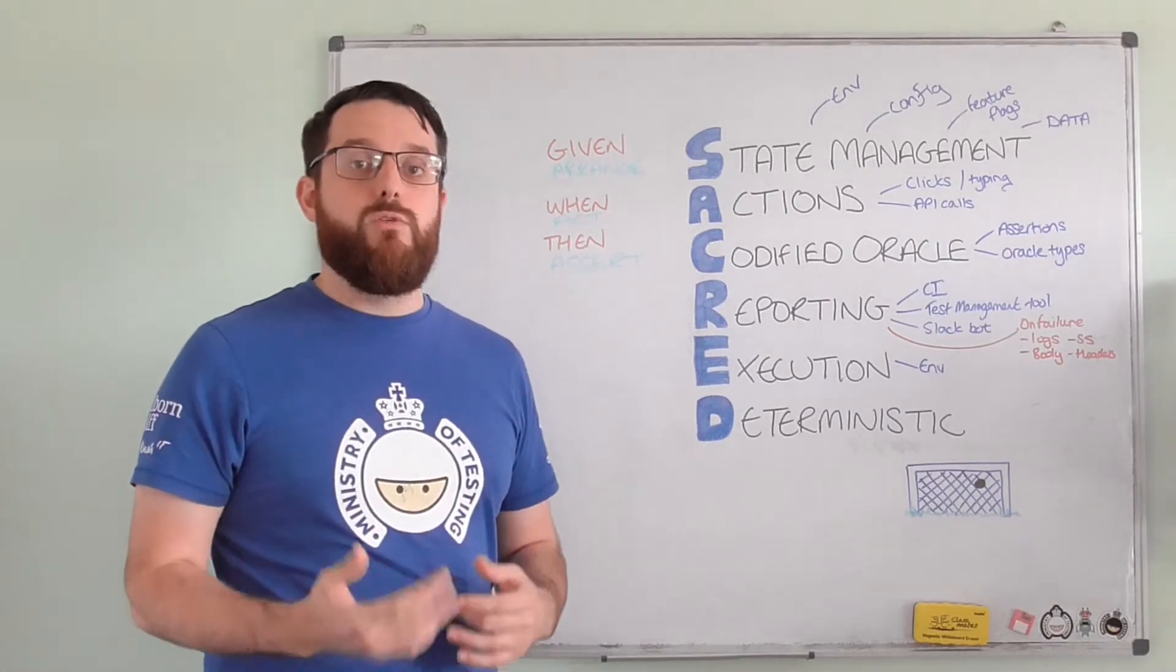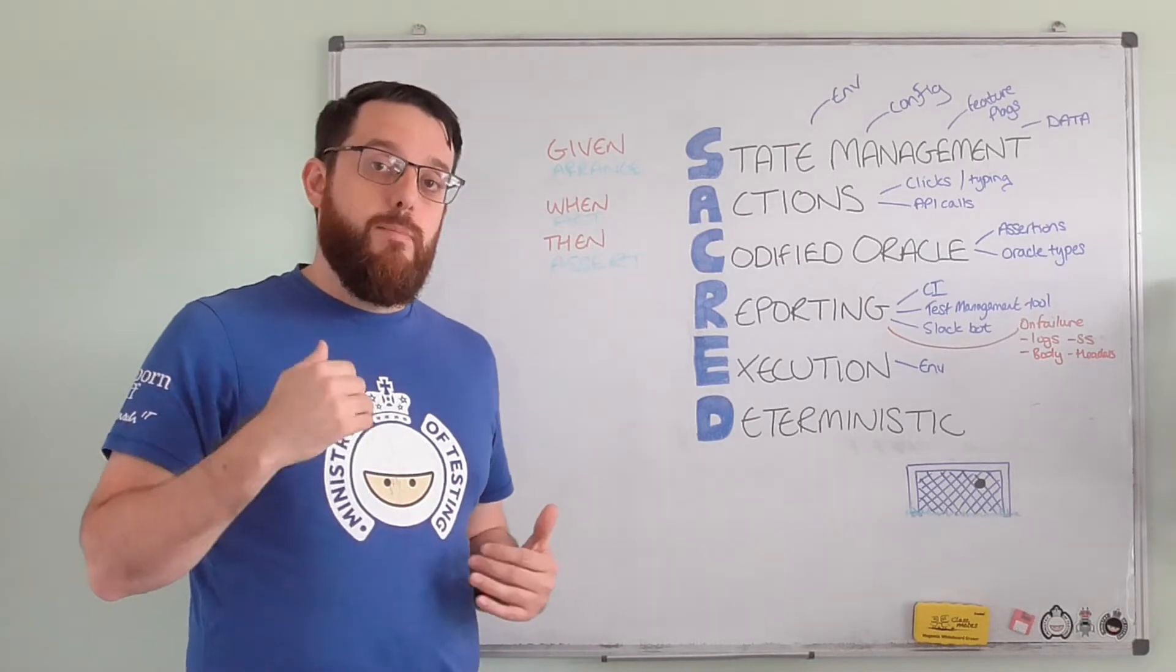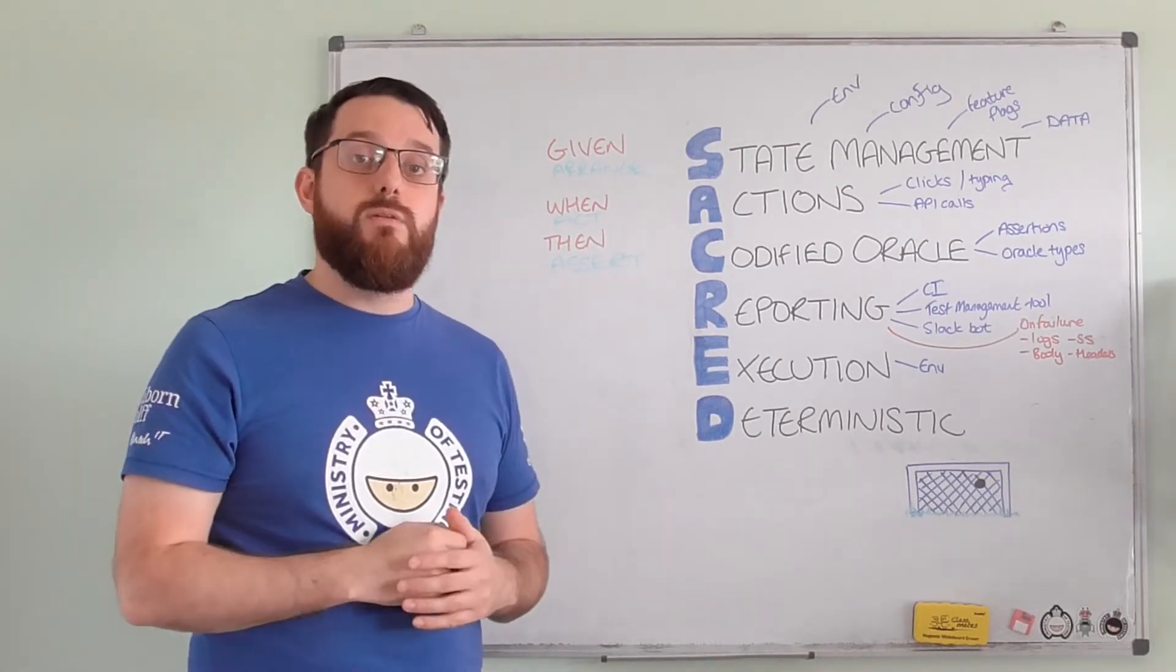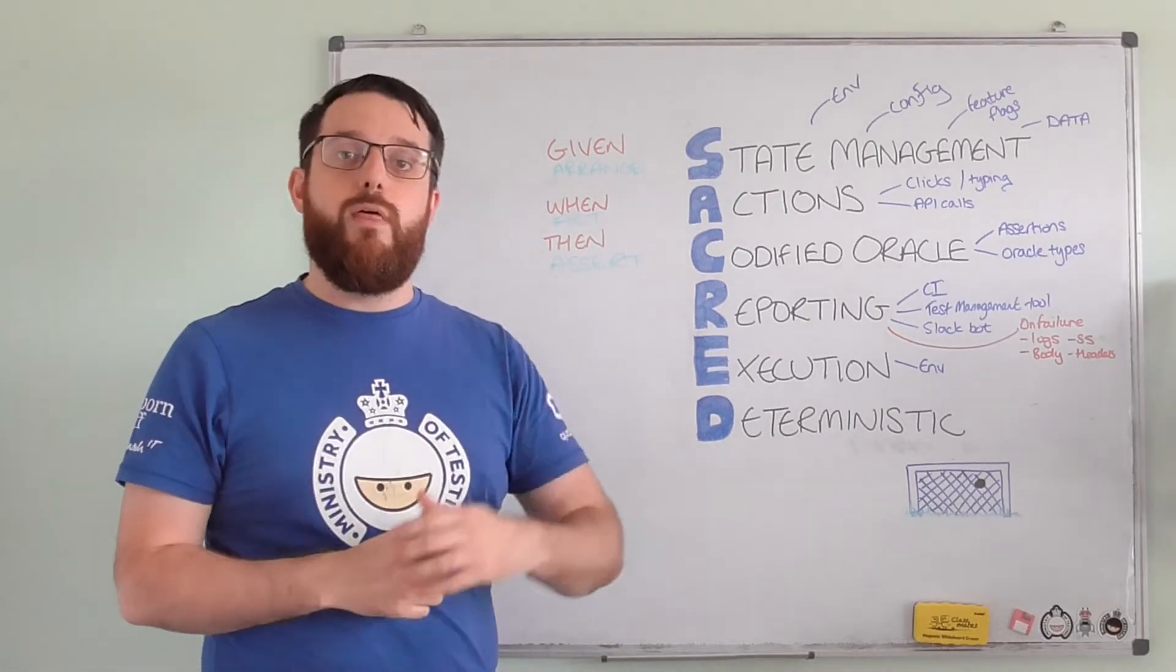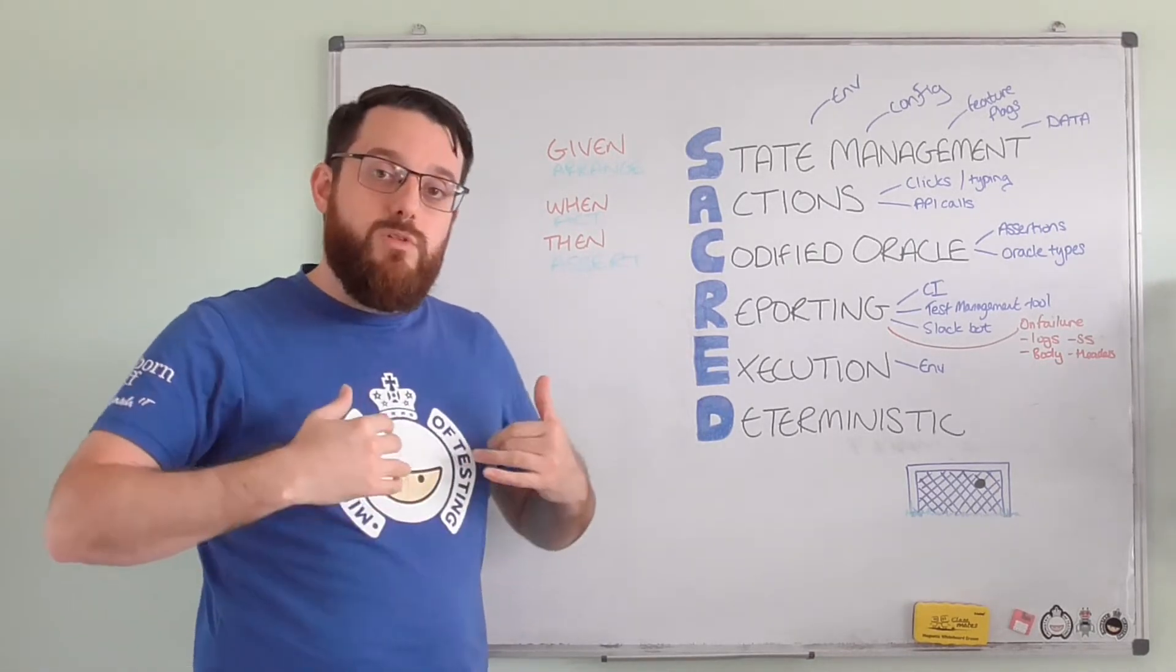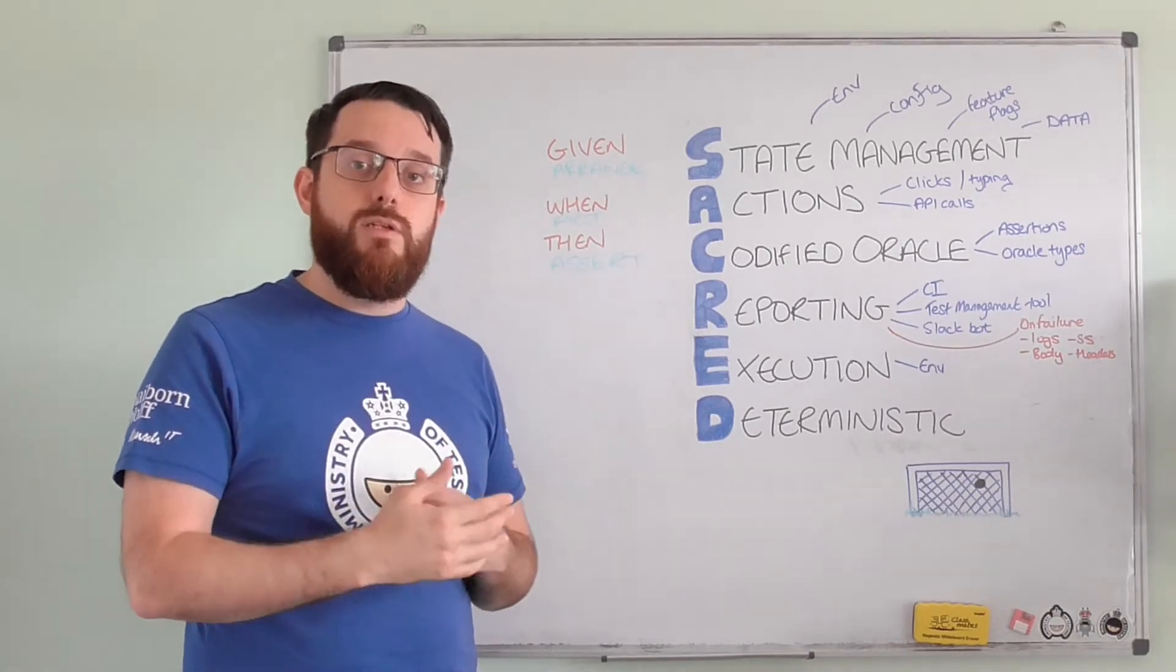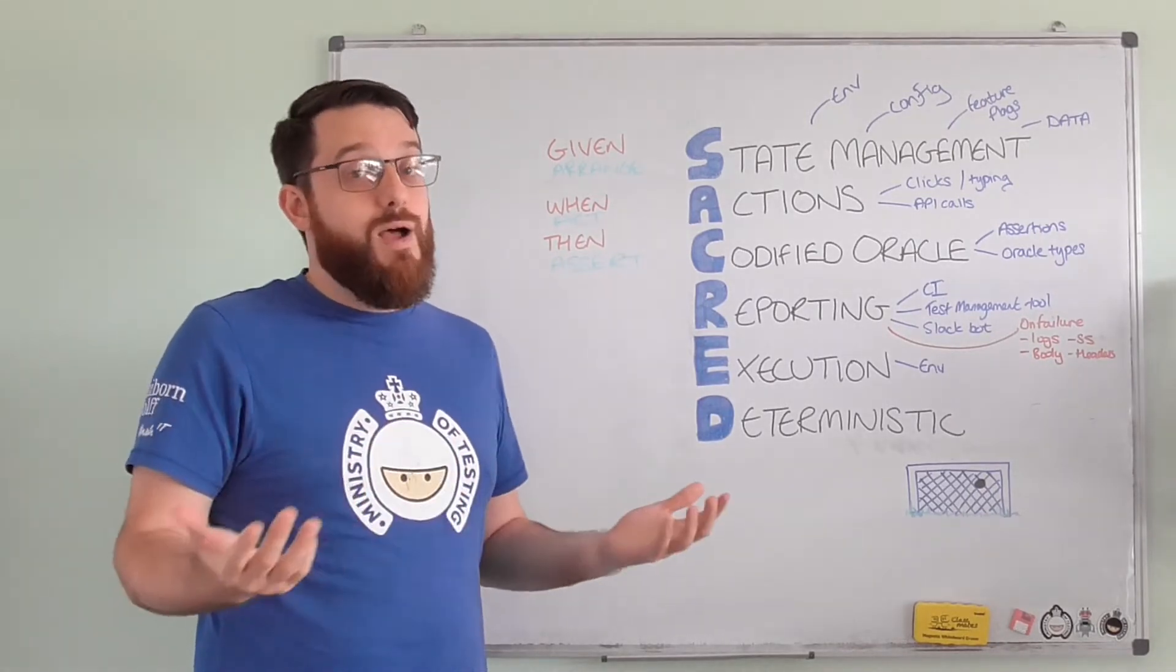When a UI script fails, I want a screenshot. Maybe I want a dump of the HTML. Maybe I want to know what's in the console. Maybe I want the logs from the actual system. If I call an API, maybe I want the whole of the JSON or the XML. I want to know what headers were there. I want to know if there's a transaction ID that I can then go and look up in another part of the system. I want as much information as I can to speed up that debugging process. So when it detects a change, we can quickly work out if that change matters or not.